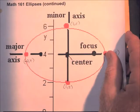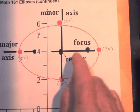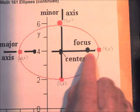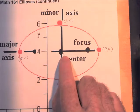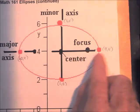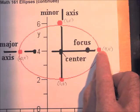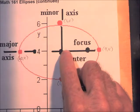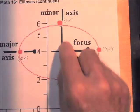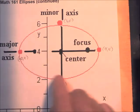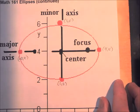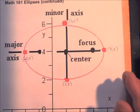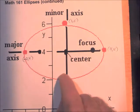Here's our ellipse. The center is at (1, 4) — 1 to the right and up 4. We go 3 to the right for one vertex and 3 to the left for the other. Then from the center we go up 2 and down 2 to get the co-vertices. Connecting those four points gives us the ellipse. This is as much as we need to do to sketch the graph.